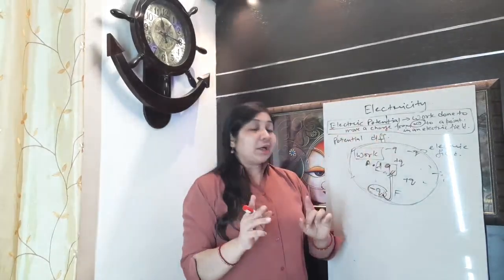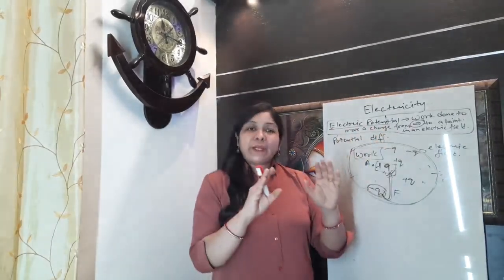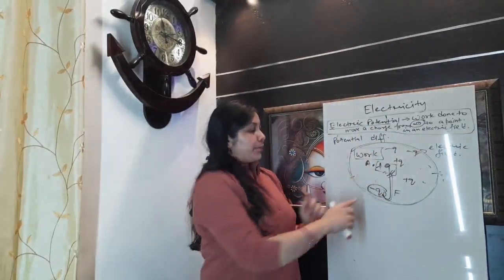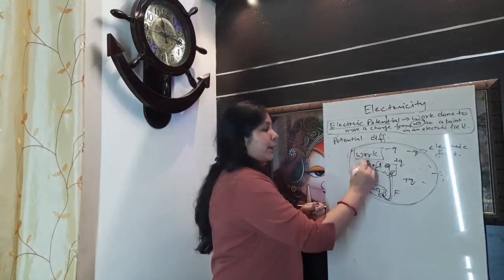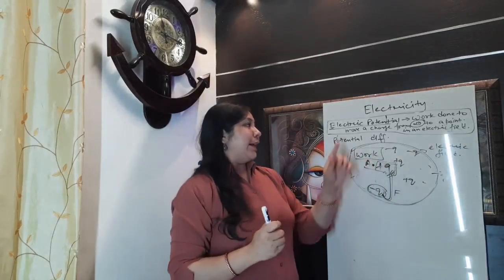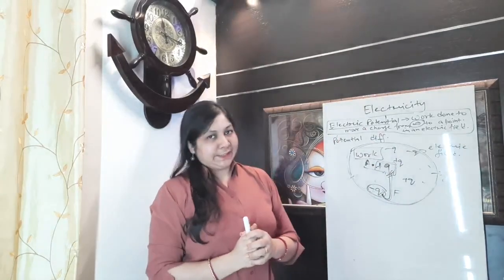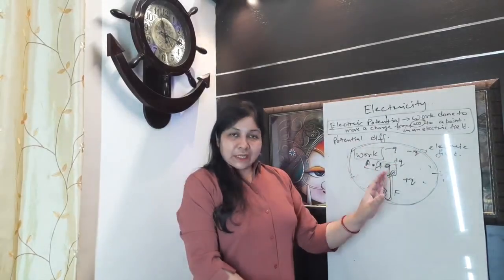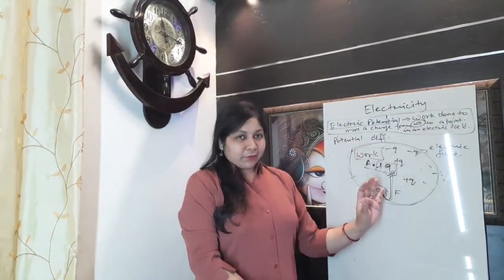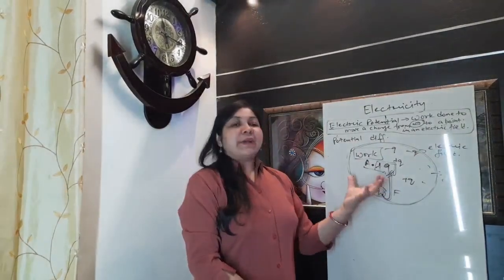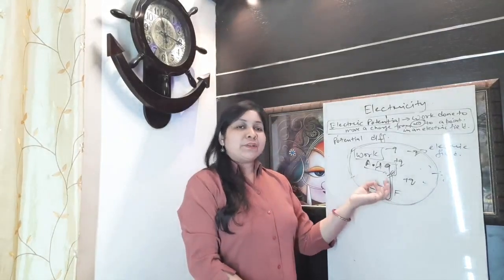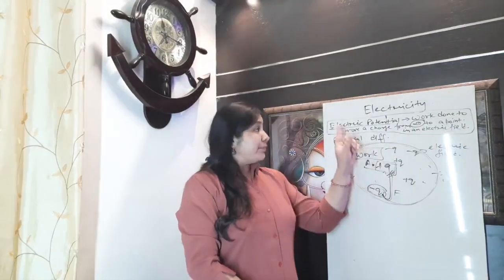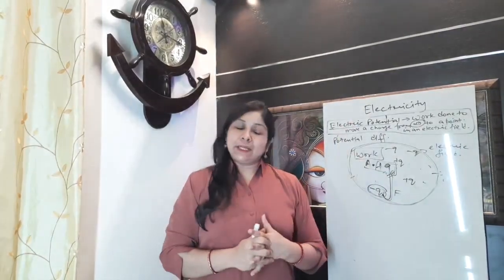So electric potential is the work done to move a charge from infinity to a point. Infinity here means this plane where there are lots of points. To a point A — we define this as electric potential. This is your infinity. Wherever you are placing another charge, it will either attract or repel it. And because of attraction or repulsion, it will move towards or away from the charge. In both cases, work done has to be performed, and that work done is defined as electric potential.